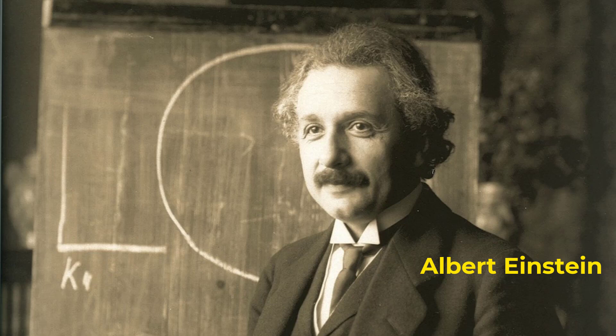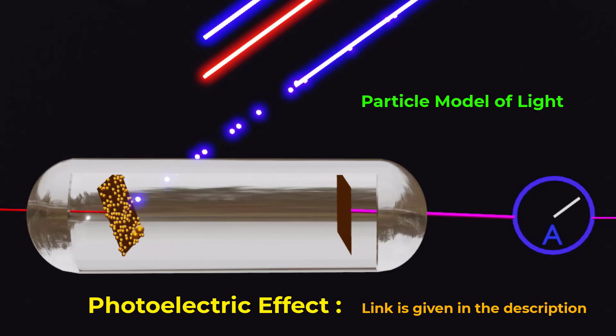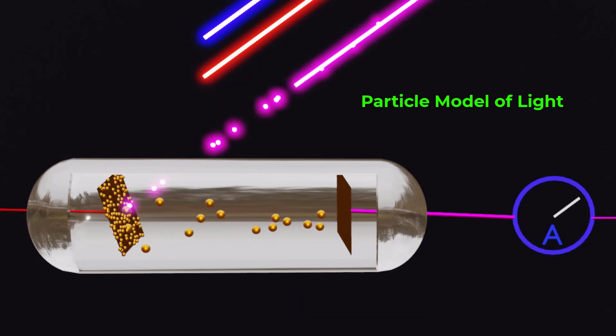Albert Einstein in 1905 suggested that the photoelectric effect could only be explained if light were composed of particles. In the photoelectric effect electrons are ejected from a metal surface when light is shone on it. Experimental results showed that light could also behave like a particle.